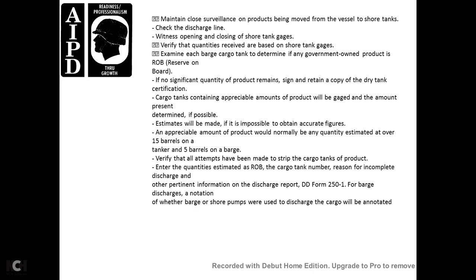Examine barge cargo to determine government-owned product remaining on board (ROB). If a significant quantity of product remains, retain a copy of the dry tank cargo gain. If impossible to obtain accurate figures, an appreciable amount of product would normally be estimated at over 15 barrels on a tanker or five barrels on a barge. Verify all attempts have been made to strip the cargo tank. Ensure the quantity estimated for ROB includes cargo tank number, reason for incomplete discharge, and other pertinent data.